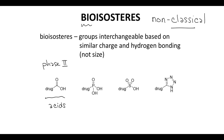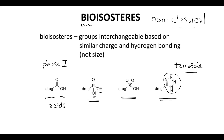Let's look at three bioisosteres of carboxylic acids. There's the phosphonate — one or even both of its OH groups will be deprotonated at biological pH. Sulfonic acids are also deprotonated. Then there's the tetrazole, a ring structure that doesn't look much like a carboxylic acid, but it has a similar pKa and preserves some of the hydrogen bonding activity. With bioisosteres, we're not focused on the size of the group — we're focused on the charge and hydrogen bonding properties.